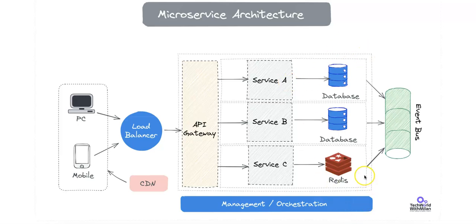One aspect of databases in microservice architecture is polyglot persistence, where each microservice might use a database technology suited to its requirements — for example, SQL for transactional data or NoSQL for high throughput. This allows for optimized performance but introduces complexity in managing different database types. Since each microservice maintains its own database, transactions spanning multiple services are complex. In such cases, distributed transactions or the SAGA pattern is often employed to maintain consistency across services.